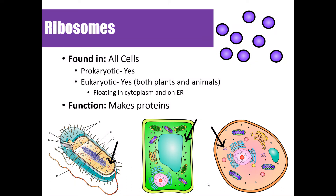Ribosomes are found in all cells — both prokaryotic and eukaryotic, and both plant and animal cells. They're made of proteins and RNA. They're located in the rough endoplasmic reticulum, which we'll look at in a moment, and can also be found floating in the cytoplasm. Their main job is to make proteins.